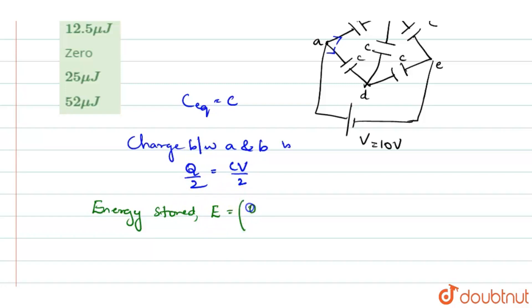You will substitute for C, you will substitute as Q by 2 whole square divided by 2C or you will write the equation as E is equal to Q square by 2C. Q square by 2C, you will substitute it here, it becomes like this. Now, this can be written as Q square by 8C.